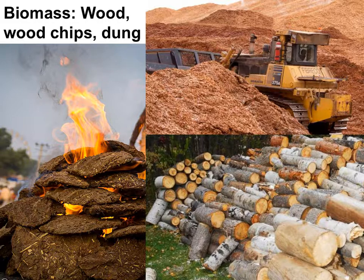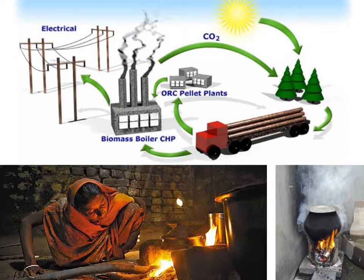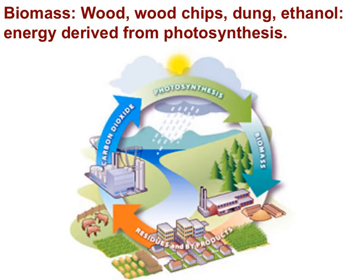Biomass energy originates from plants that have removed carbon dioxide from the atmosphere during photosynthesis. It's very important to understand why wood, dung, and ethanol as fuel sources serve to mitigate climate change — they're carbon dioxide neutral. The carbon dioxide released when they are burned is absorbed by photosynthesis in plant growth — carbon neutral. Can you explain why biomass energy, also known as biofuel energy, is considered renewable and carbon neutral, thus mitigating the impact of climate change? The explanation is here in the circle in front of you.